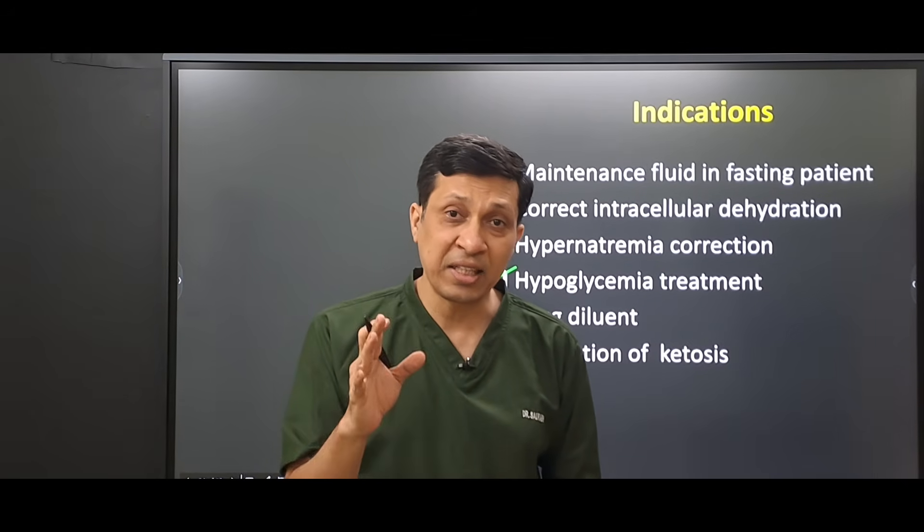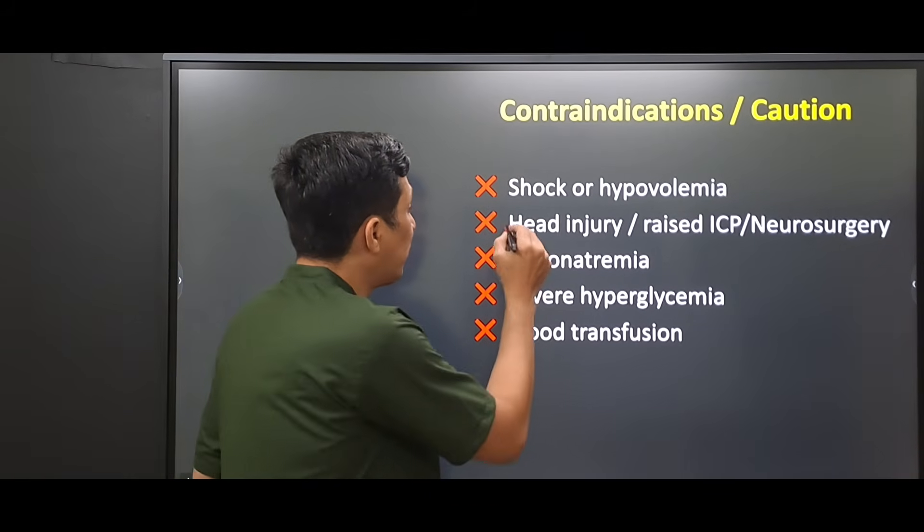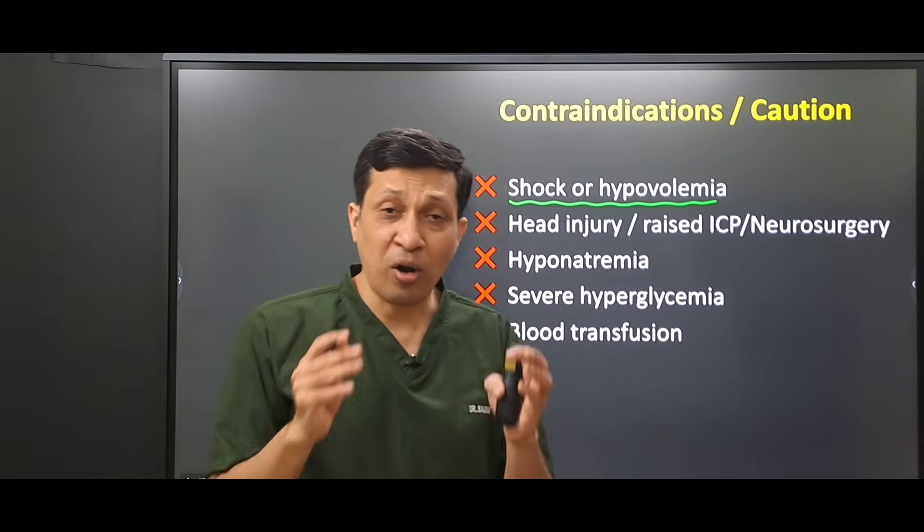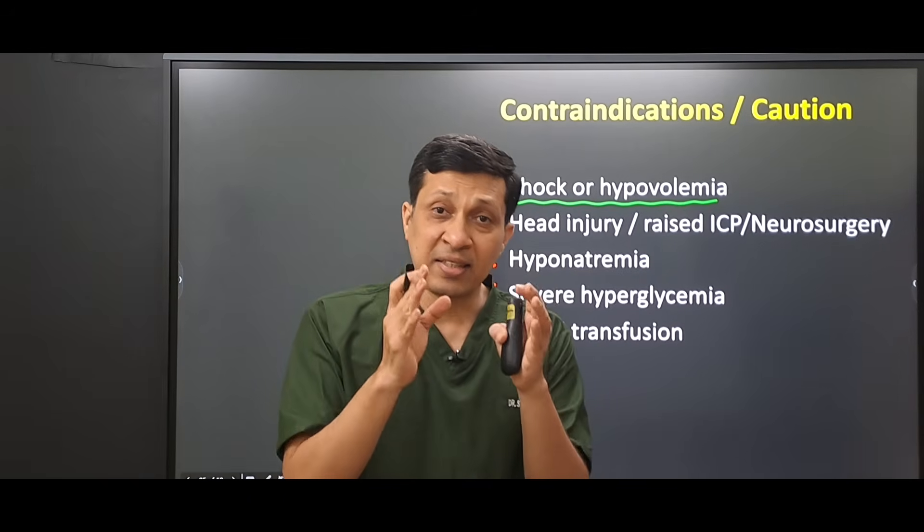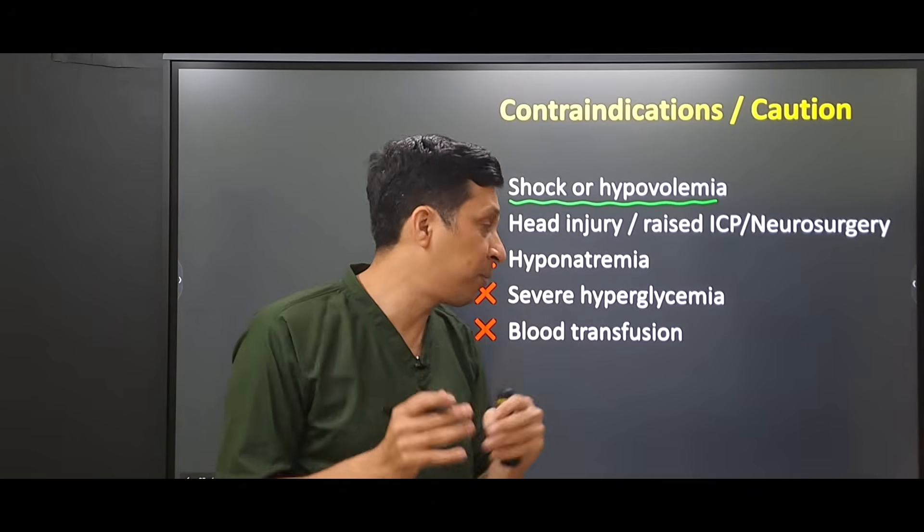These are the indications of dextrose 5%. Then what are the contraindications? It is not useful in shock or hypovolemia. As I have already explained, very few quantity of this fluid stays in the intravascular compartment.